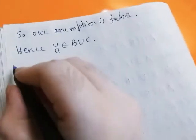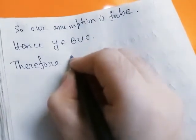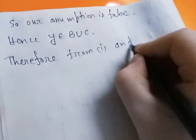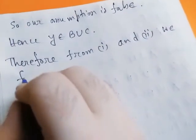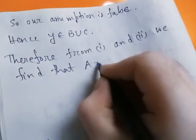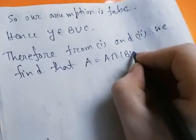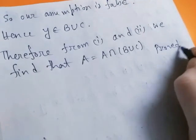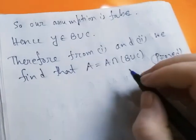Since y belongs to B∪C, we have already shown in Case 1 that A ⊆ A∩(B∪C). From (1) and (2) we find that A = A∩(B∪C). Proved. If you like this video, please share, subscribe, and comment.